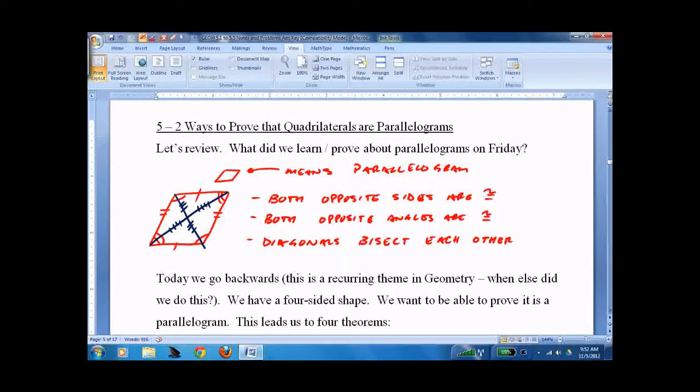Now, as you probably figured out, in geometry we go forwards and then we go backwards. So yesterday was we have a parallelogram. Here's what is going on with the sides, the opposite angles, the diagonals. Today we're going to say here's what's going on with the sides, the opposite angles, the diagonals. Do we have a parallelogram?